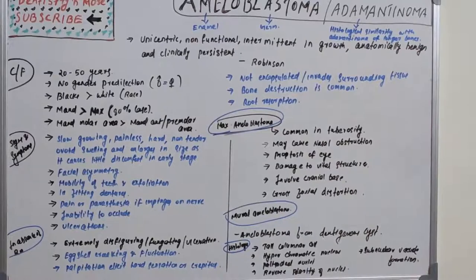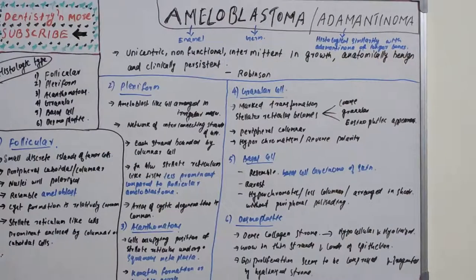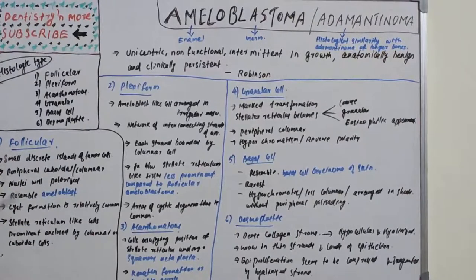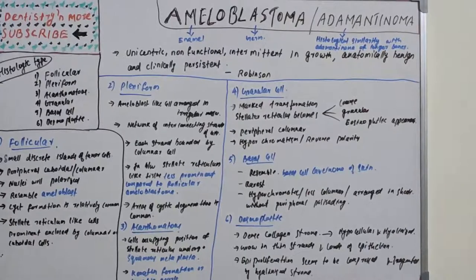Now let's see the histological classification of ameloblastoma. It is divided into six types: follicular, plexiform, acanthomatous, granular, basal cell, and desmoplastic — based on the histological picture. When writing for exams, always include pictures for histological explanations.